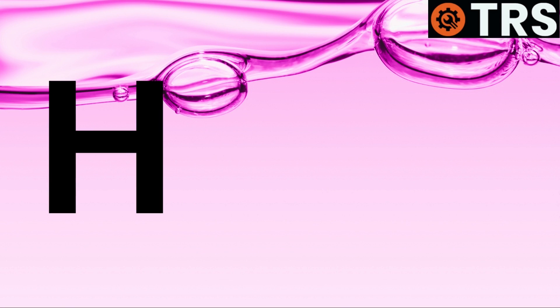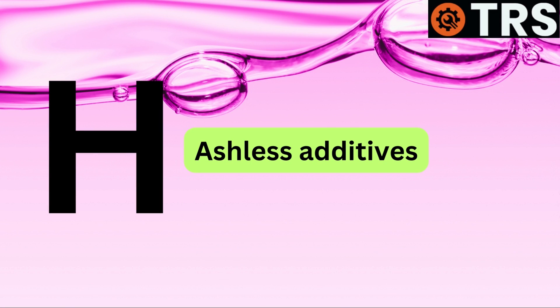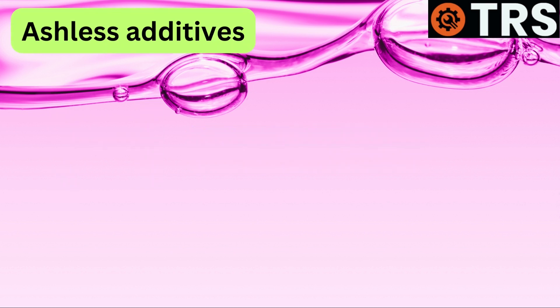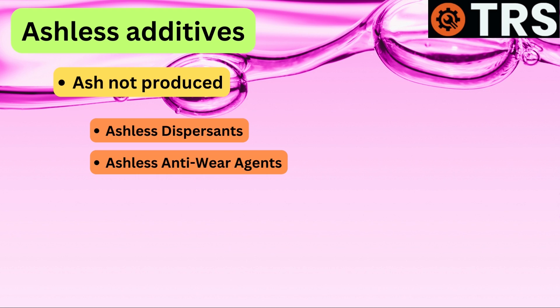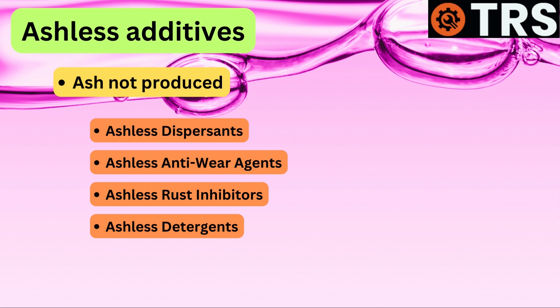H: Ashless additives. As mentioned previously, ash is not produced as a by-product during combustion of ashless additives. Some of the ashless additives found in two-stroke oil are ashless dispersants, ashless anti-wear agents, ashless rust inhibitors, and ashless detergents.